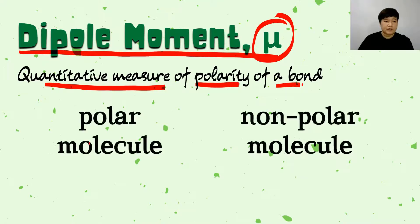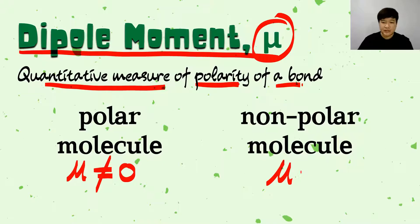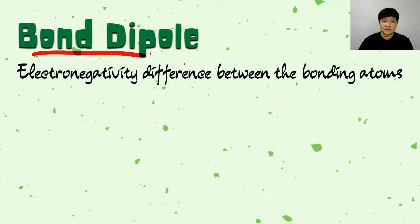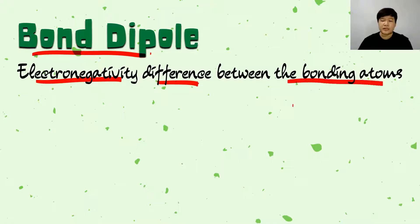For a polar molecule, mu must not equal zero, while for a non-polar molecule the dipole moment must equal zero. How do we know whether the dipole moment is zero or not? It depends on bond dipole. Bond dipole is the electronegativity difference between the bonding atoms.